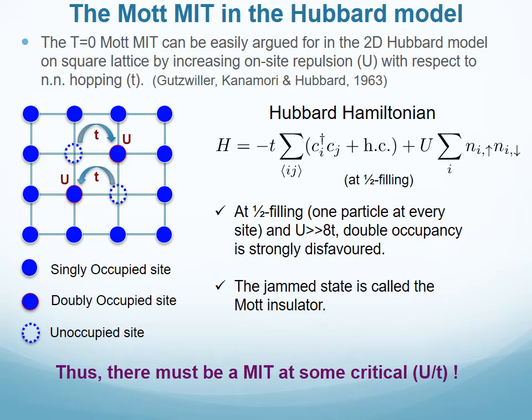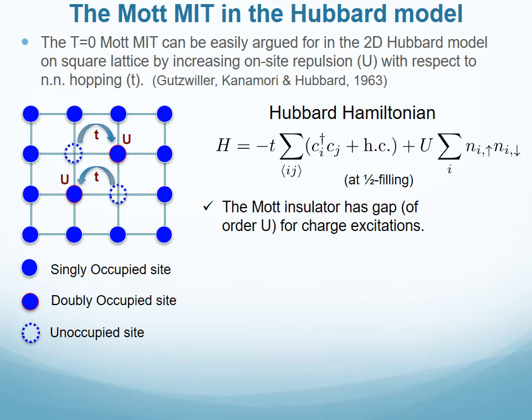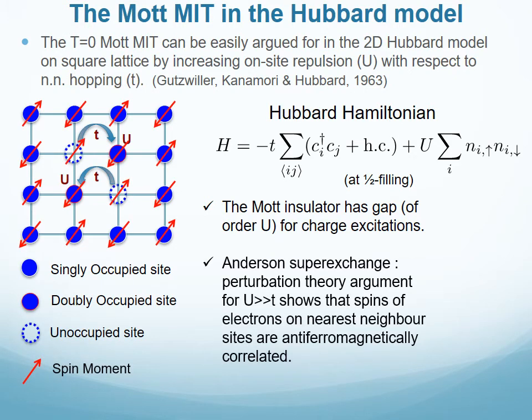On the other hand, at half filling and for the case of the repulsion being much greater than the bandwidth, double occupancy is strongly disfavored and the resulting ground state is the Mott insulator. Thus, there must be a Mott transition at some critical value of the ratio U/T. This insulating state has a gap of order U for charge-carrying excitations. Further, a perturbation-theoretic argument for Anderson's loop exchange shows that the spin degrees of freedom on nearest-neighbor sites in this insulating state are antiferromagnetically correlated.